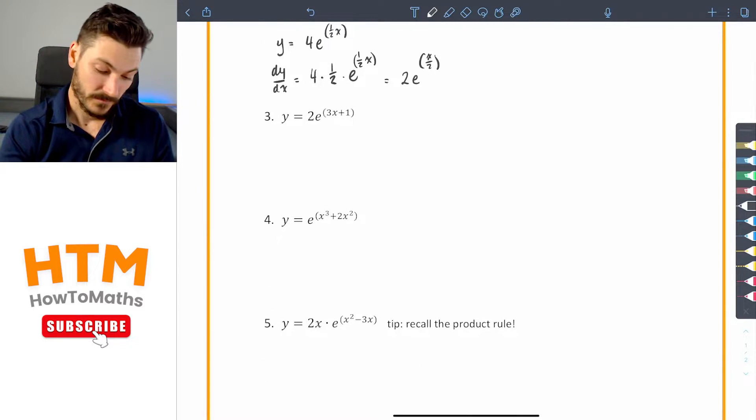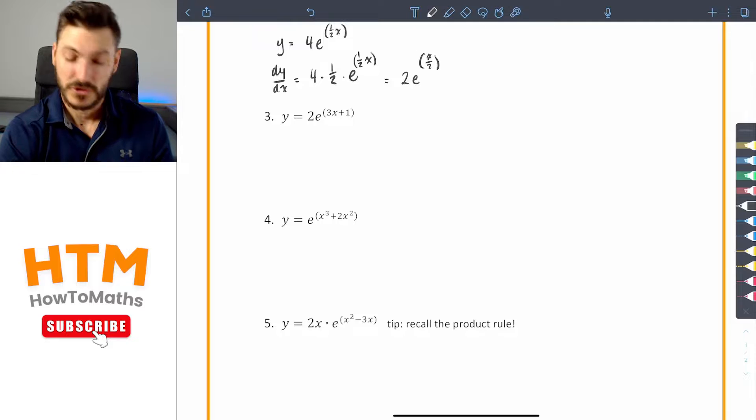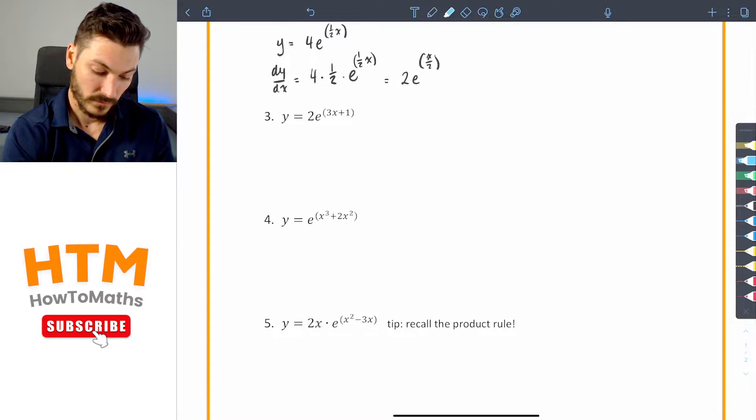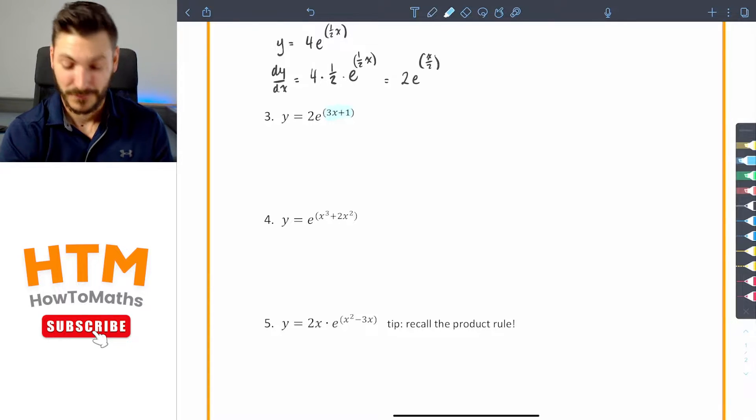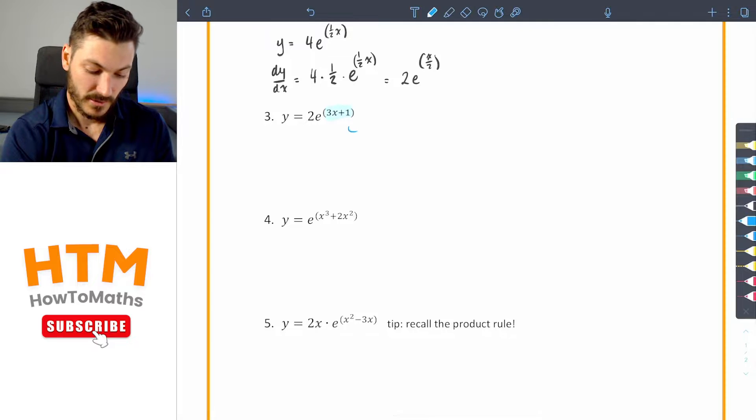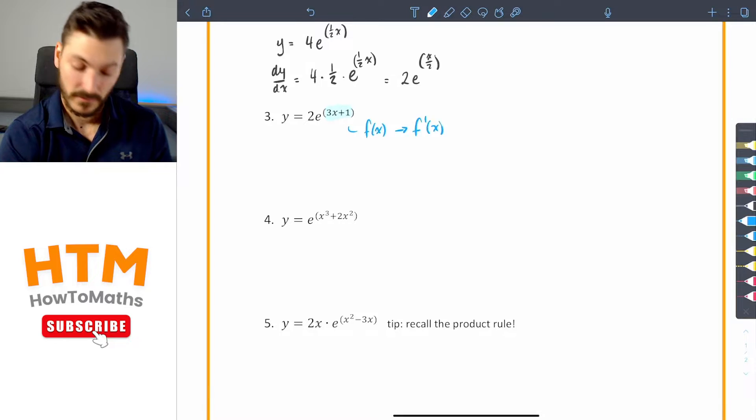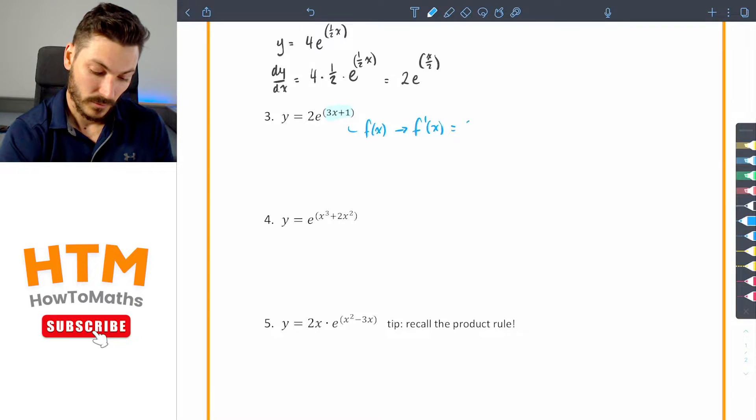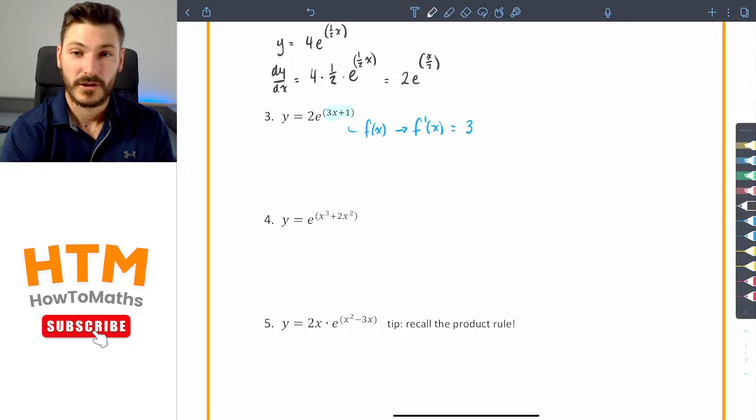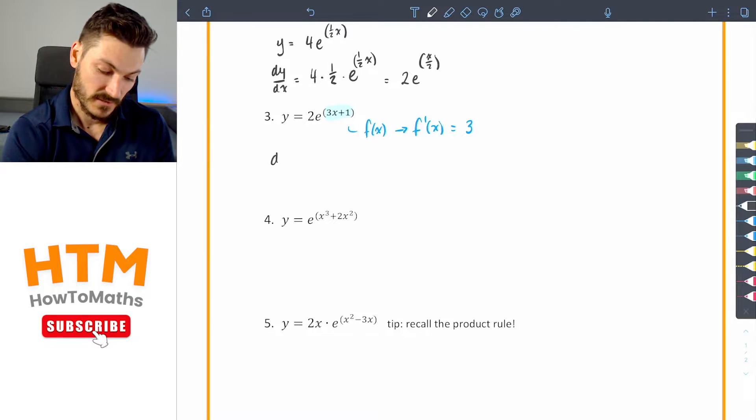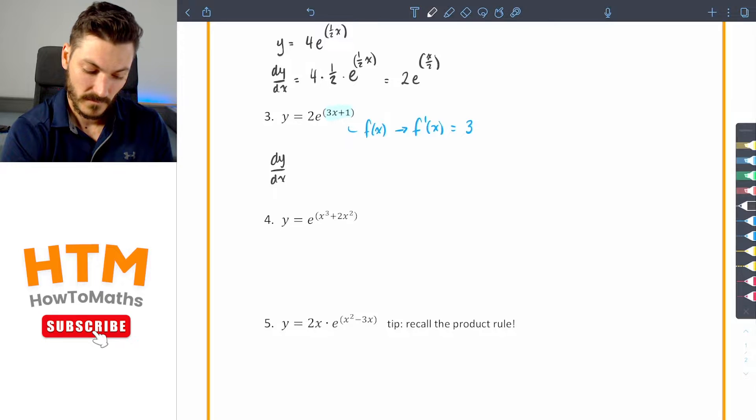On to question three. This is where we have a function of x. So as per my other video where I explain this concept, I'm going to call this f of x. And I'm going to therefore find the derivative of that, which I'll call f dash x. And that's going to equal three. So now I know that I'm just going to multiply the derivative by the original function.